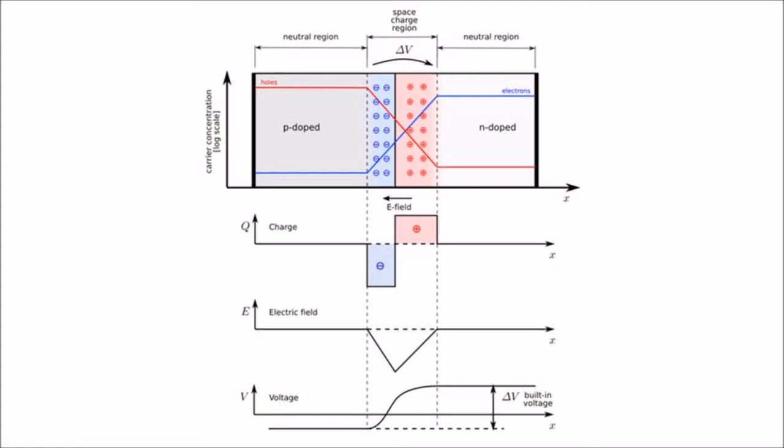The carrier concentration profile at equilibrium is shown in the figure, with the blue and red lines represented here. Also shown are the two counterbalancing phenomena that establish the equilibrium condition.